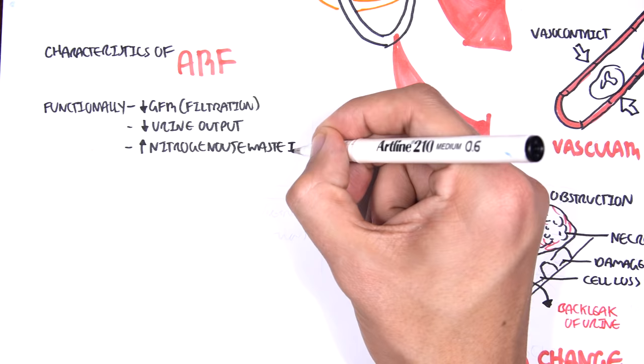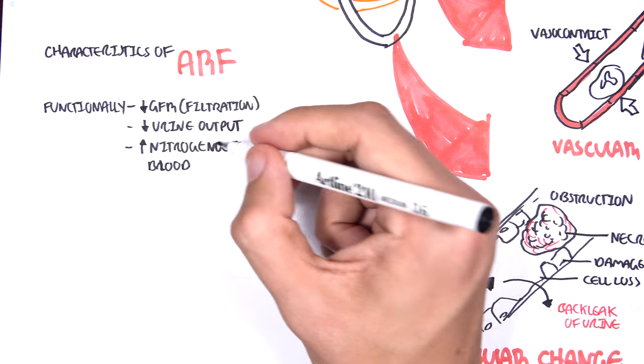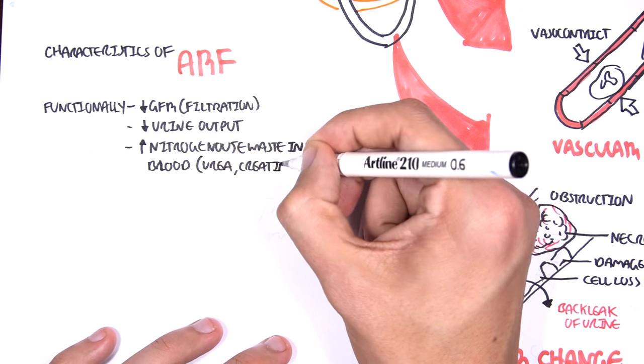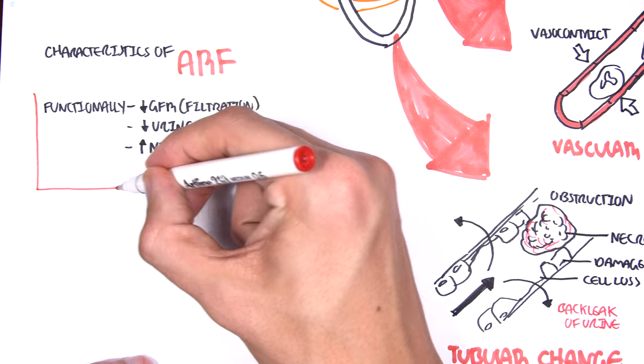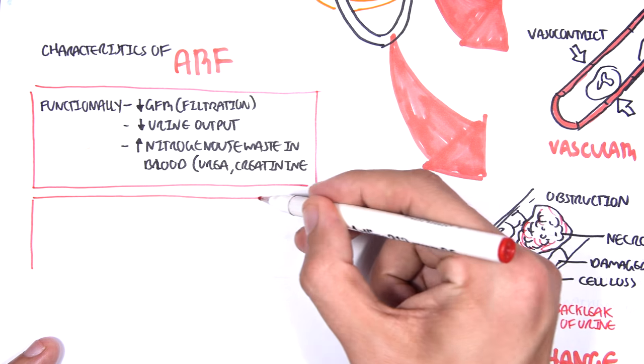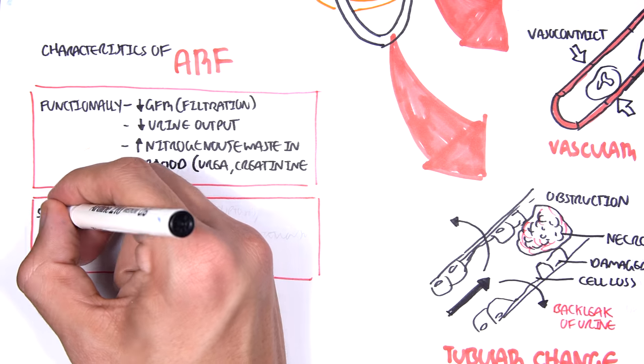And we will have, as a result of some problems in the tube, increase in nitrogenous waste in the blood, such as urea and creatinine. And this is what we can use to measure acute renal failure, the severity.